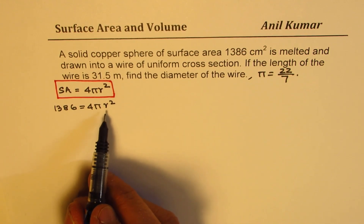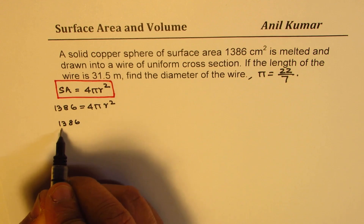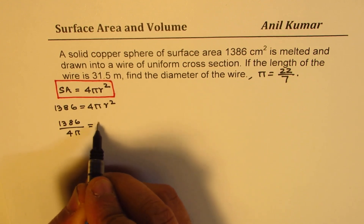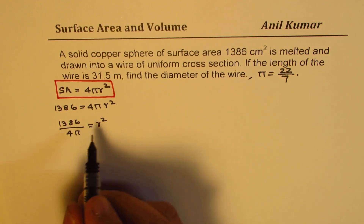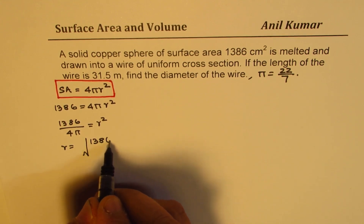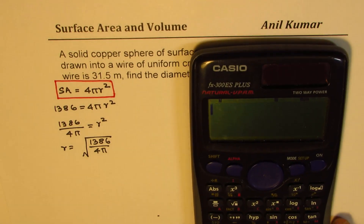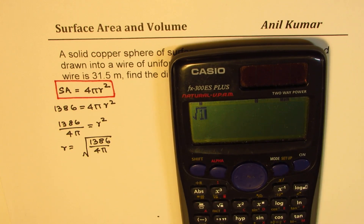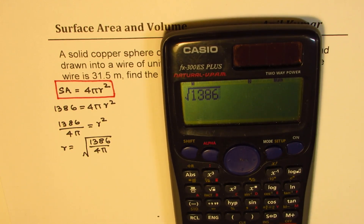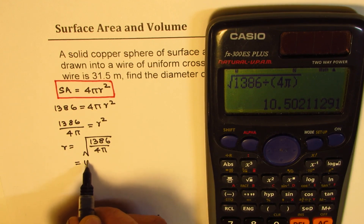So that means r² = 1386 / (4π), and therefore r = √(1386 / (4π)). From here, we get the value of r. So we have √(1386 / (4π)), and it is equal to 10.5. So this value of r is 10.5.